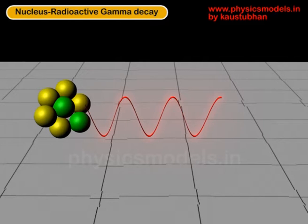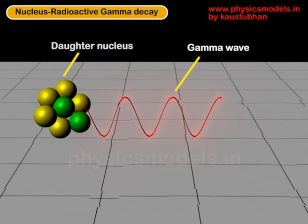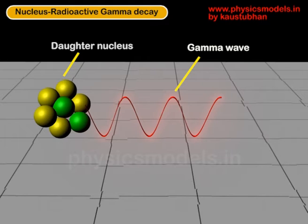In this image we are looking not at the parent but at a daughter nucleus. The daughter nucleus can sometimes come out at a highly excited energy level and it wants to climb down to a more stable state, which means a lower energy level. In that process of climbing down from high excitation to lower excitation, it emits waves called the gamma waves.